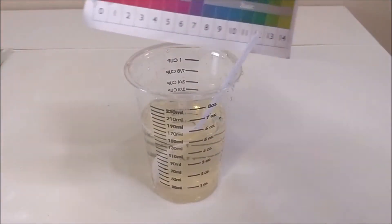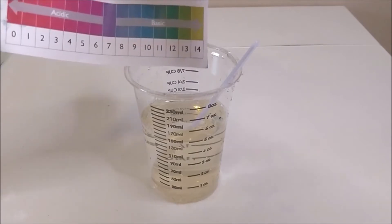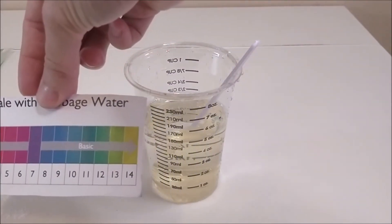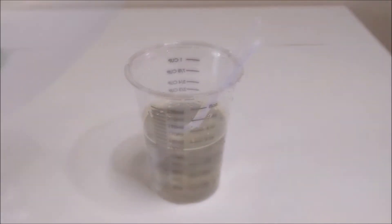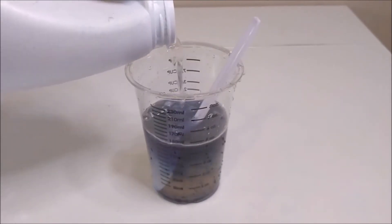Notice that there's a number under each color. So this substance, for example, it changes to sort of a yellowy clear color. And based on the guide, that means a pH of about 14. So this is pretty basic, because numbers on the high end are basic. Numbers on the low end are acidic.